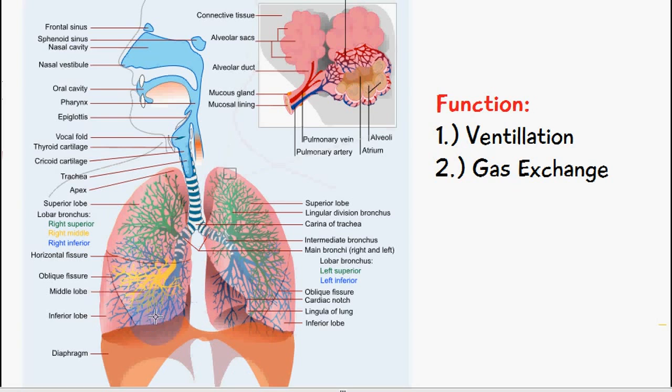So following on we have the primary bronchus, the secondary bronchus and the tertiary bronchus. Then we have the bronchioles and then we have the alveoli.